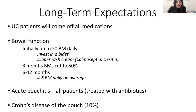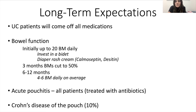Other long-term issues patients can face include acute pouchitis — a bacterial infection of the pouch that generally responds well to antibiotics. Most patients feel like their UC has come back, experiencing a flare, urgency, frequency, sometimes blood, cramping, and pain. The good news is that most patients respond very well to antibiotics. A small subset of patients go on to develop chronic pouchitis, where you have to be maintained on a low dose of antibiotics or another medication to help maintain control of inflammation.